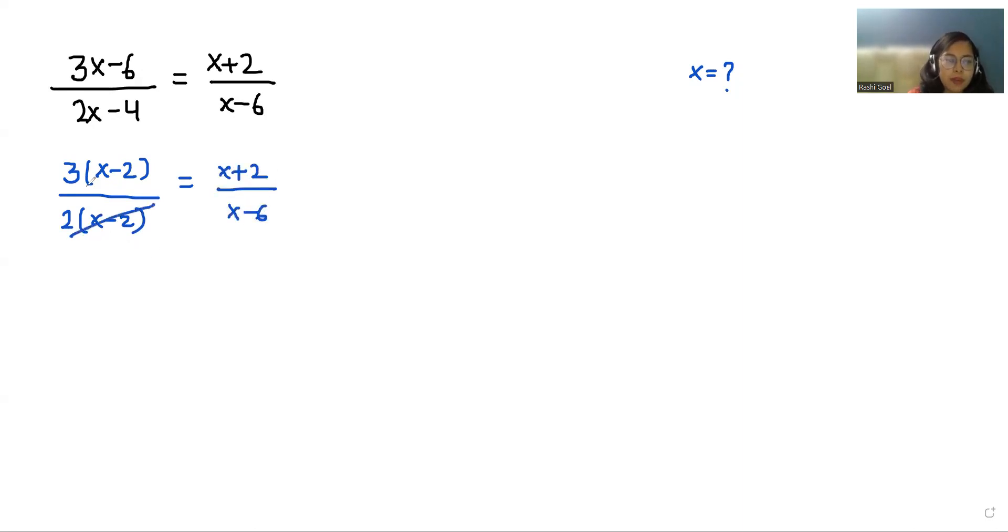Now we can eliminate this x minus 2 from numerator as well as denominator. So what is left? 3/2 equals (x+2)/(x-6).